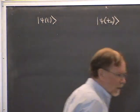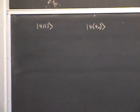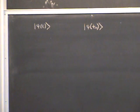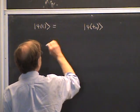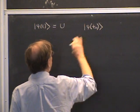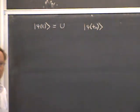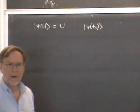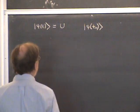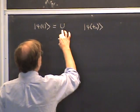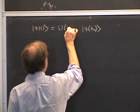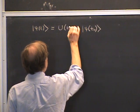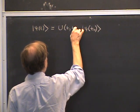What's the relationship between the two? We postulate that there is a linear relationship, so that psi at a later time is given by some linear operator acting on the earlier state, called the operator U. The operator U must be parameterized by the two times — the initial and the final — written as U(t, t0), with the final time first and the initial time second.